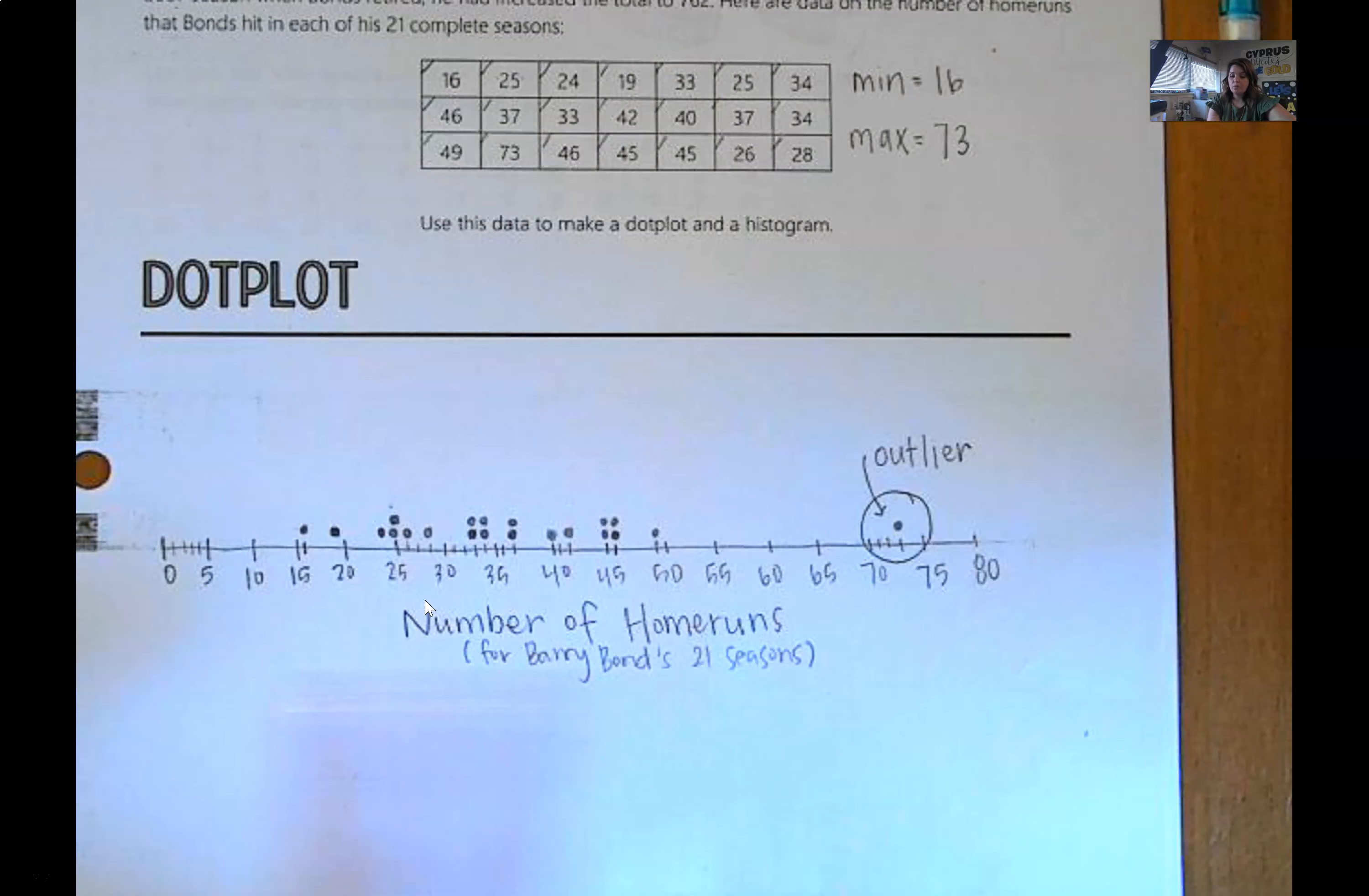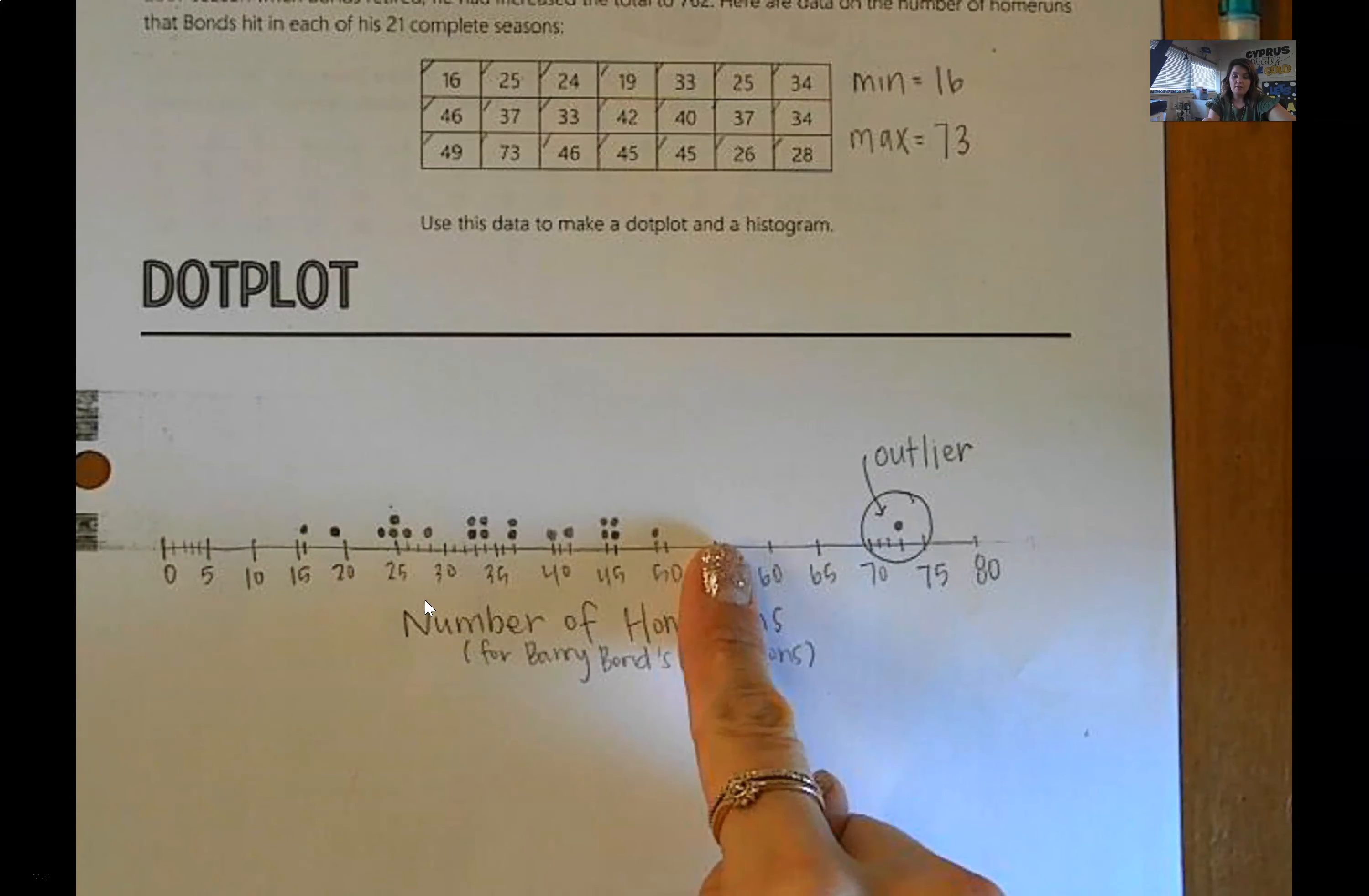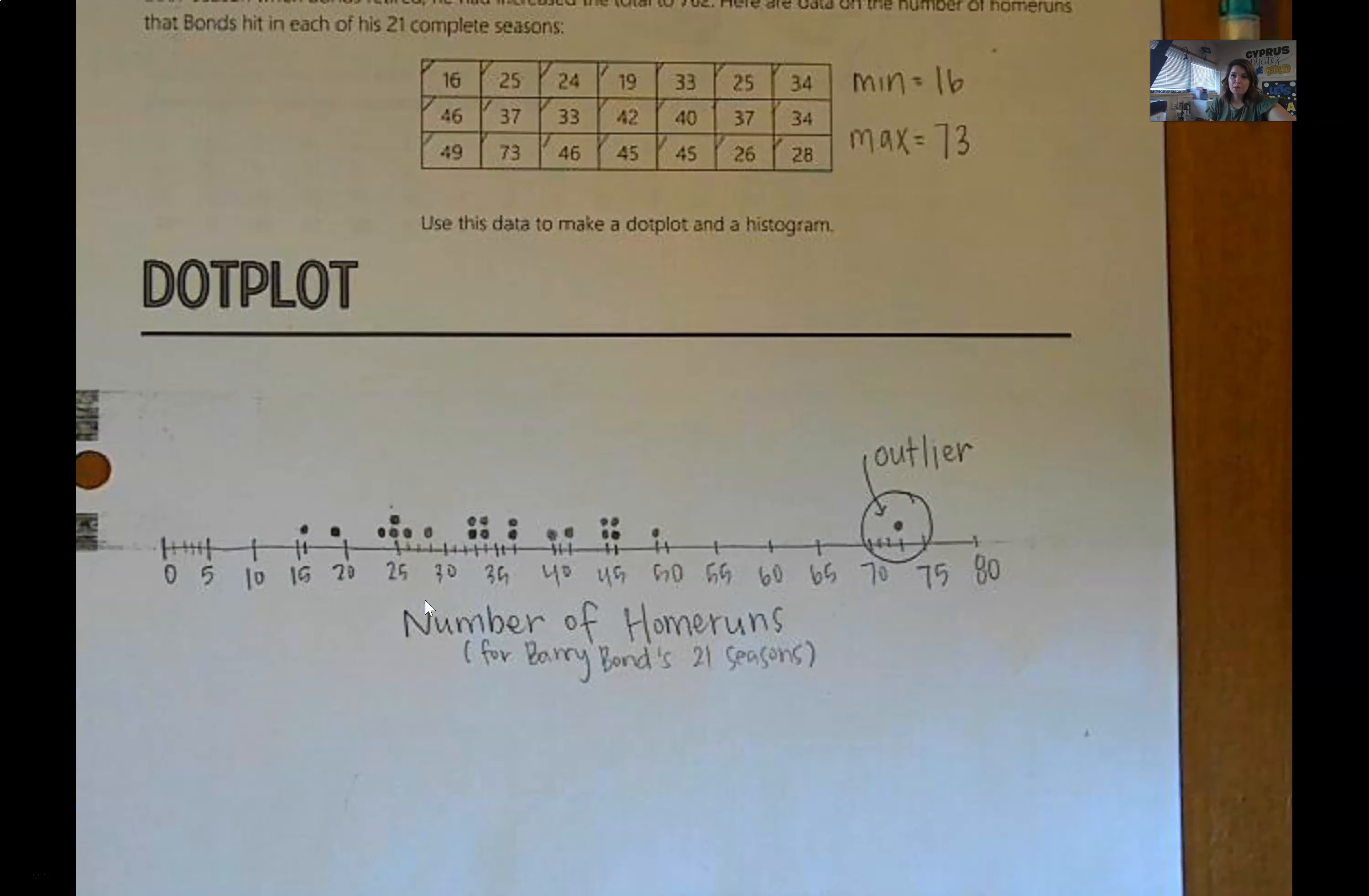And then the other thing that we typically talk about is center, but that takes a little bit longer to go through why we do that and how we do that. So we're going to skip that for now. So this is our dot plot. We have one axis. We scale it, we label it, and then we just simply put our data values, our observations down as a dot on the graph. Then we usually look at shape, nothing interesting. Spread, this is very spread out. Anything unusual, yep, this guy here. And then center, like I said, we'll do that at a different time. Okay, that's all there is for dot plots.